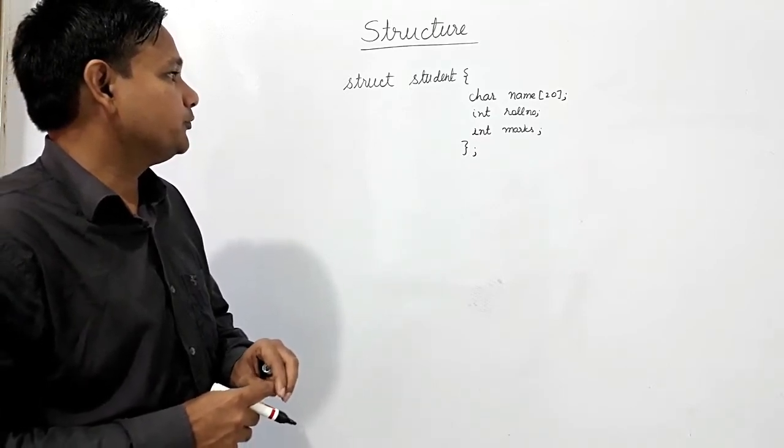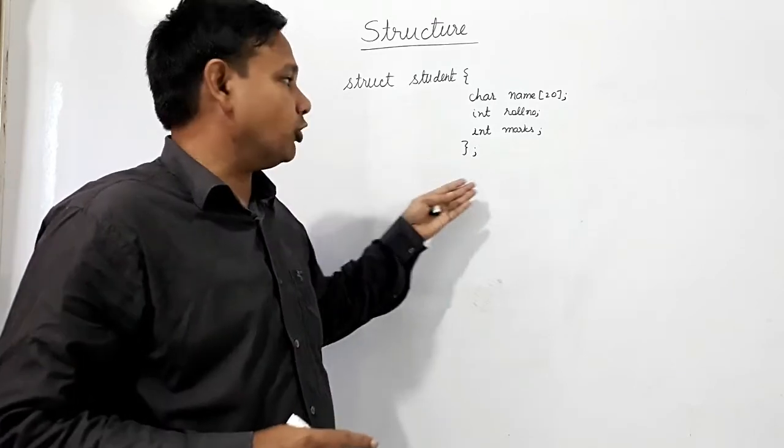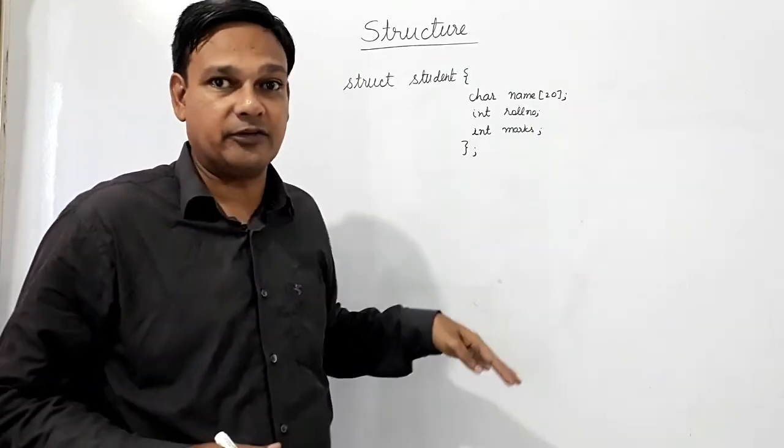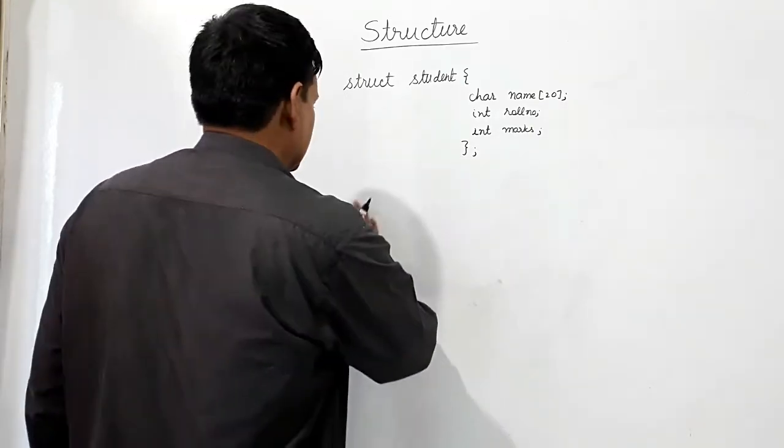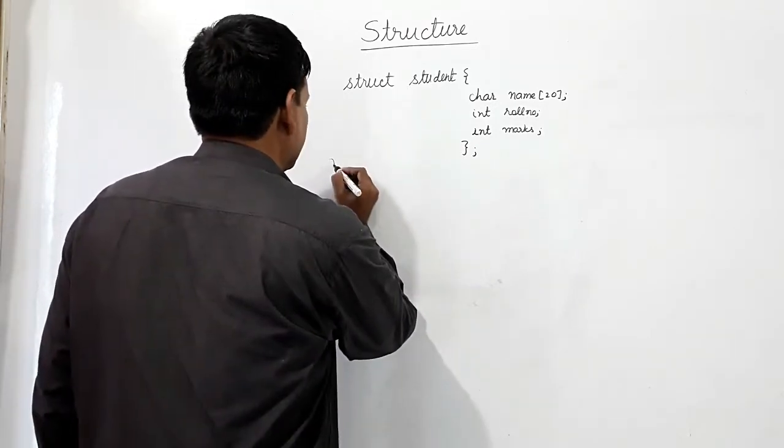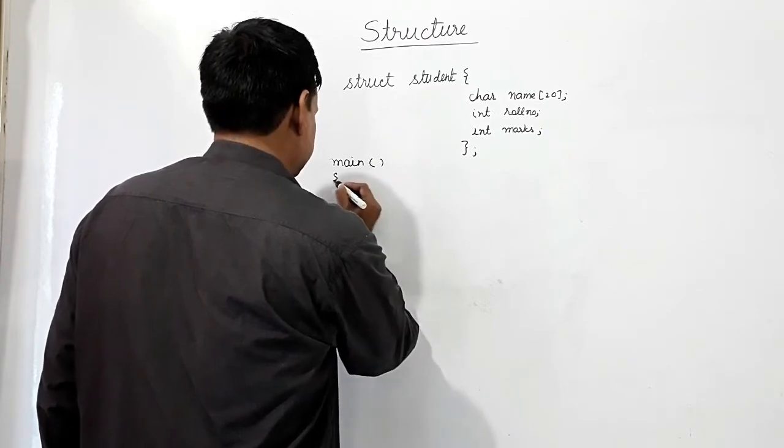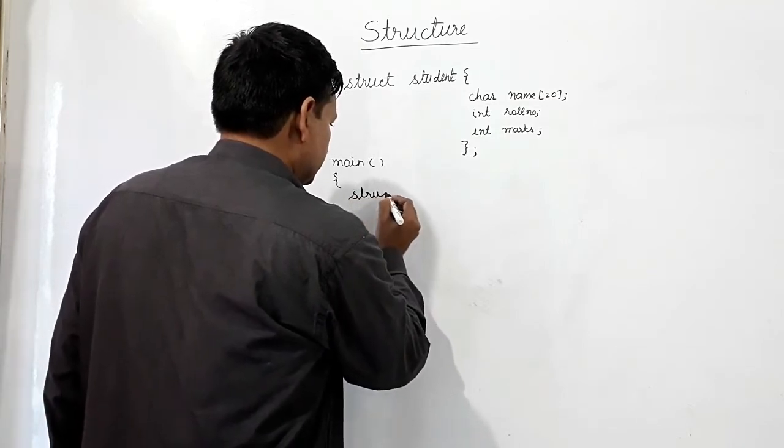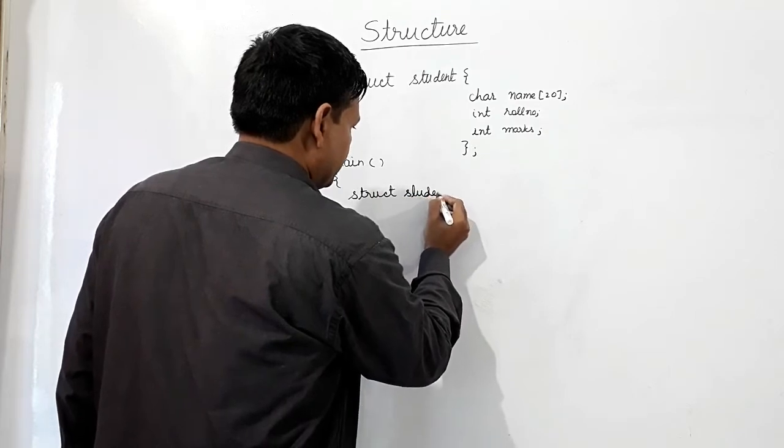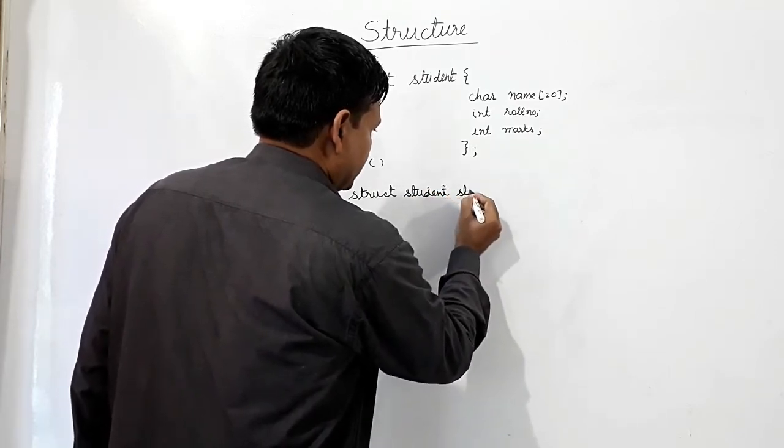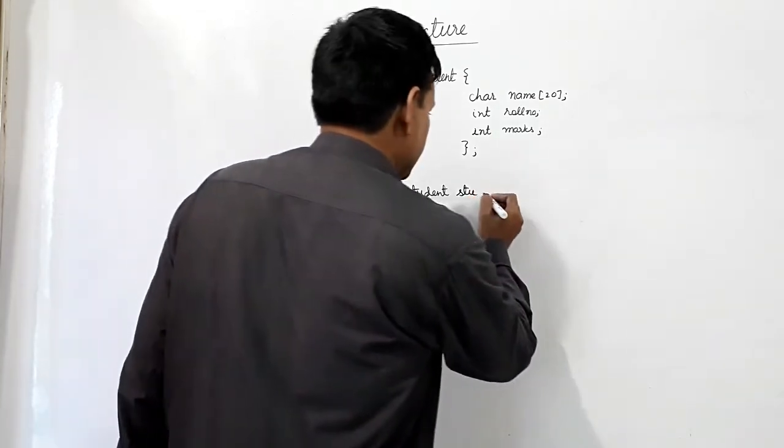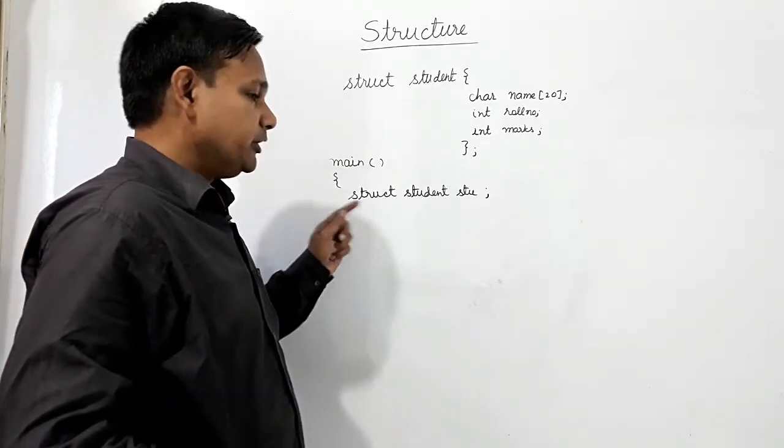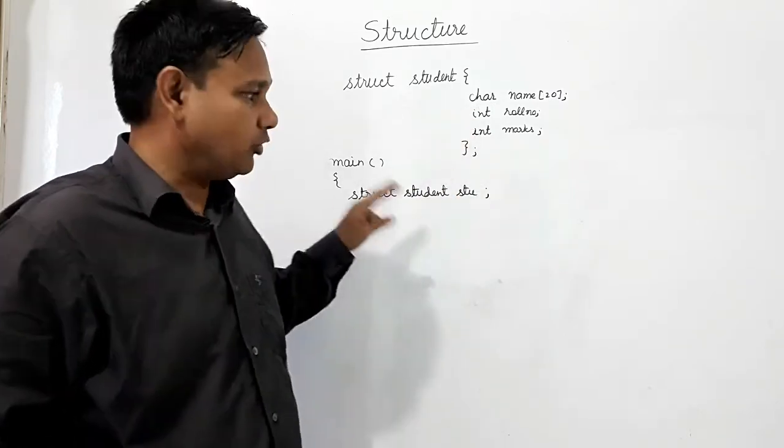Okay, now if we want to declare its object globally, I can use its objects in the main function also. So I can use its object in main function. Then how can I declare - struct student. If there is only one student, then I want to input the data of this only single student.